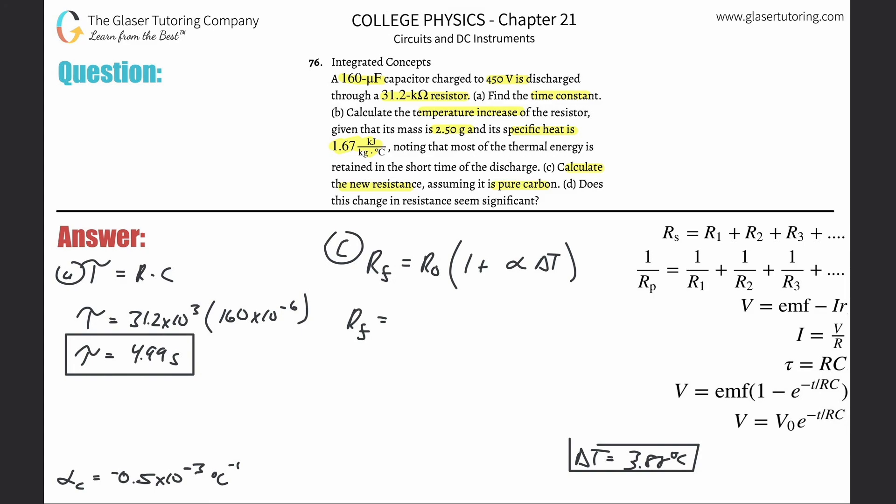I wrote it down here on the bottom. So your initial resistance in the problem was 31.2 kilo ohms, and you can leave it in terms of kilo ohms, it really doesn't matter in this problem. So 1 plus then our alpha, which is negative 0.5 times 10 to the minus 3, then multiplied by our change in temperature, which is 3.88.